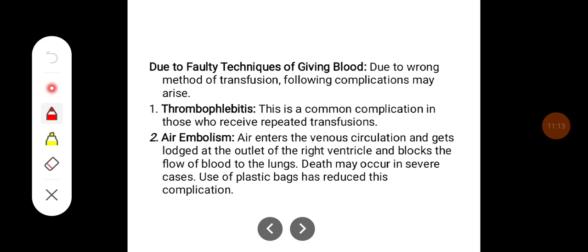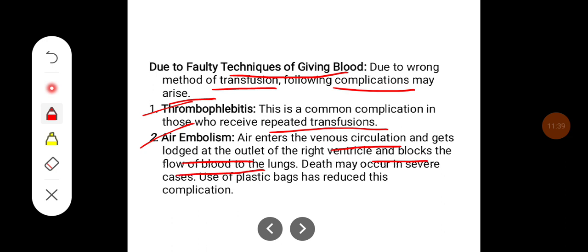There can also be adverse reactions due to faulty techniques while giving blood. Due to wrong method of transfusion, the following complications may arise: thrombophlebitis, which is a common complication in those who receive repeated transfusions; and air embolism, where air enters the venous circulation and gets lodged at the outlet of the right ventricle, blocking the flow of blood to the lungs. Death may occur in severe cases. The use of plastic bags has reduced this complication.